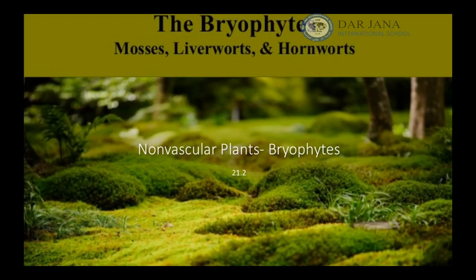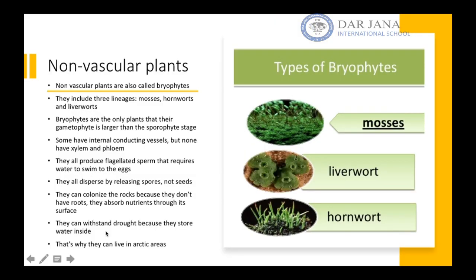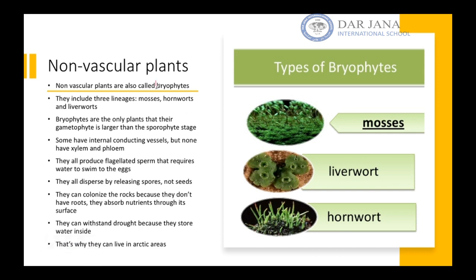Hello everyone. This is 21.2 non-vascular plants. Non-vascular plants have another name — they're also called the bryophytes. Bryophytes include three groups or lineages: the mosses, the hornworts, and the liverworts.